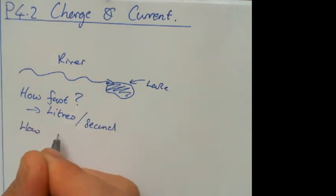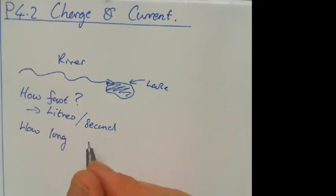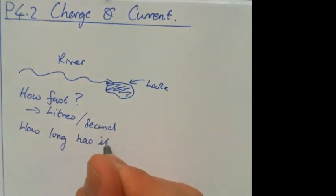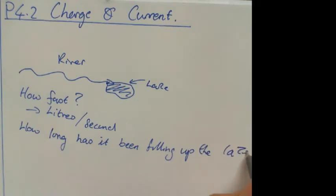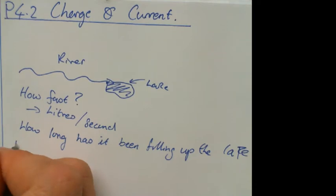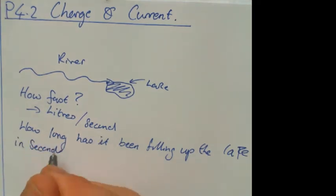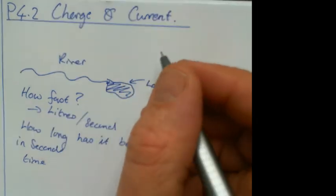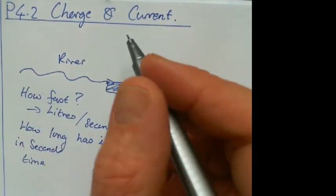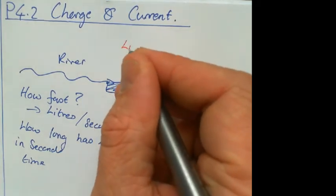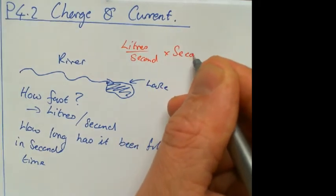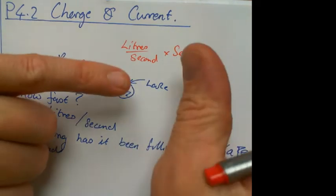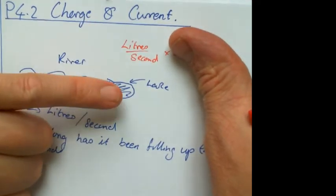You'd also want to know how long it has been flowing into that lake, in seconds — so that would be your time. If you want to know how much water was in the lake, it would just be how fast it's flowing — the current of the river, in litres per second — times by the number of seconds the river has been filling up that lake. Those two seconds cancel, leaving you with the number of litres in that lake.